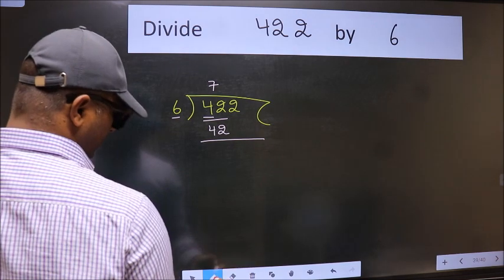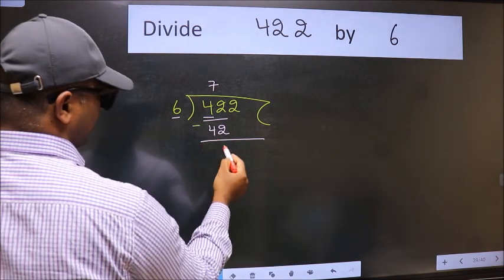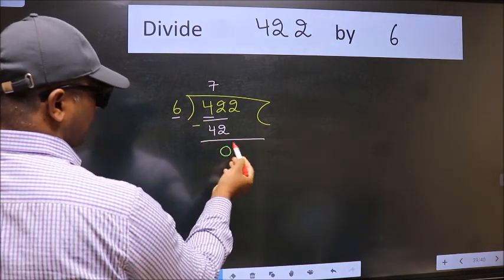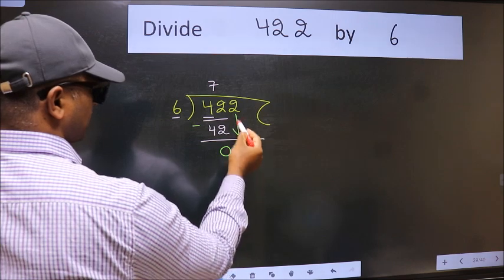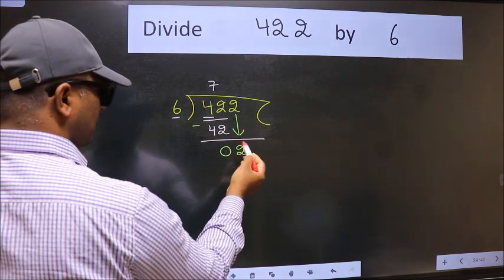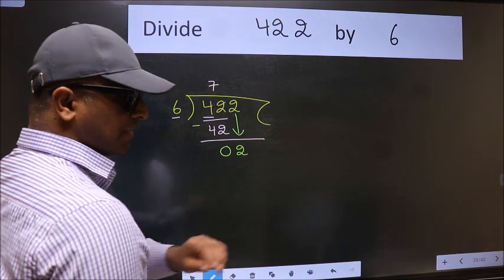Now we should subtract. We get 0. After this, bring down the beside number, so 2 down. After this step, the mistake happens.